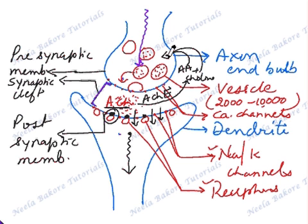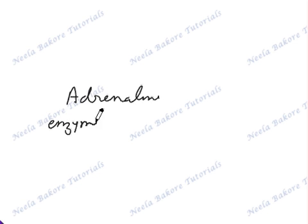These two substances are taken by the axon end bulb, and here this neurotransmitter acetylcholine will be resynthesized. If the neurotransmitter is adrenaline, then the enzyme which breaks it down is monoamine oxidase.